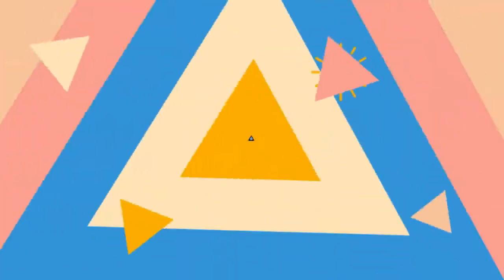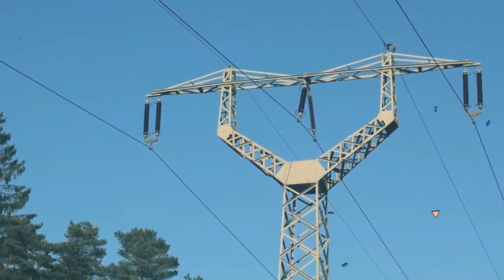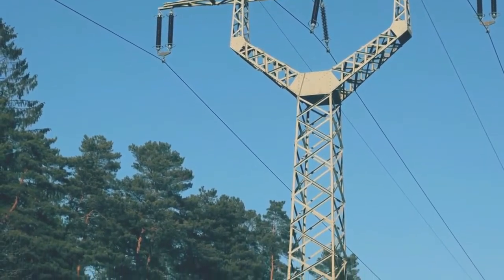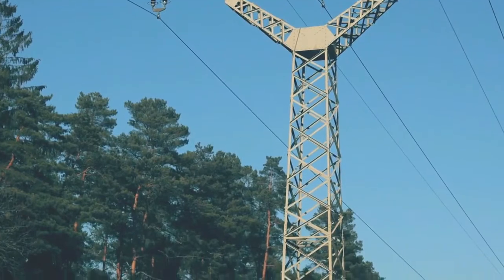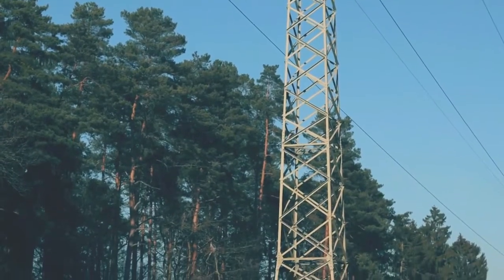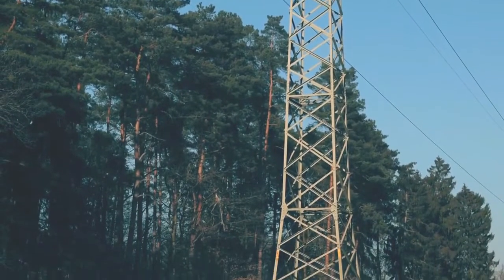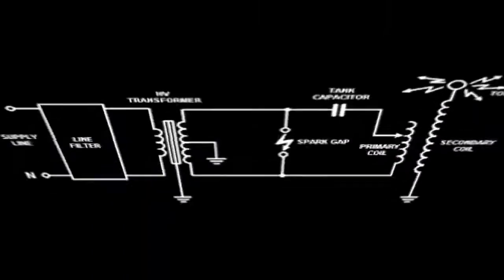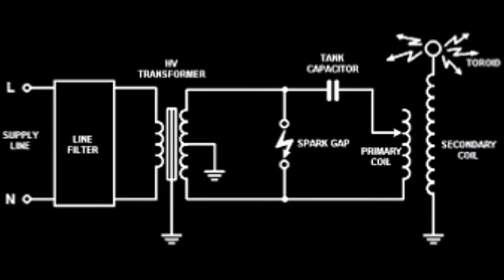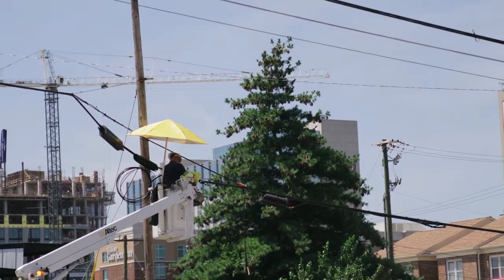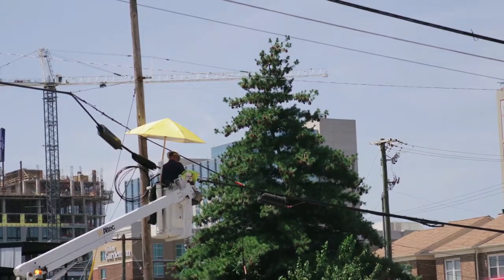The difference in the number of turns in each winding determines if the voltage out will be higher or lower than the voltage in, and by how much. A Tesla coil has very few turns on the primary input side and many turns on the secondary output side. This increases the voltage tremendously, and this is what we call a step-up transformer.